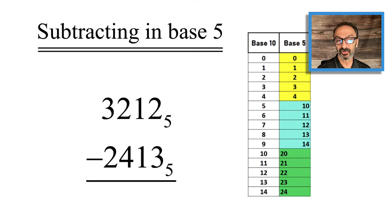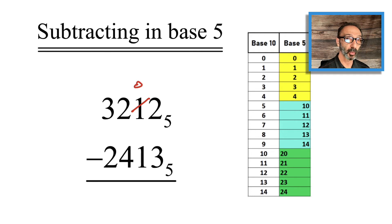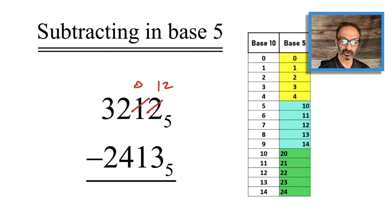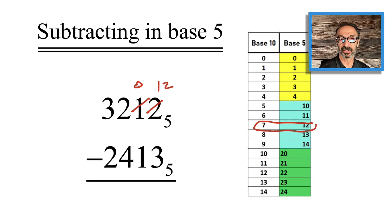On the units place I have 2 minus 3, which I cannot do. So I go to the next digit on my left, make it zero, and borrow that 1 five, adding it to the 2. The 2 becomes 1 2, which means 1 five and 2 units. You don't need to memorize the chart — just think: 1 five and 2 units is 7. So 7 minus 3 is 4.